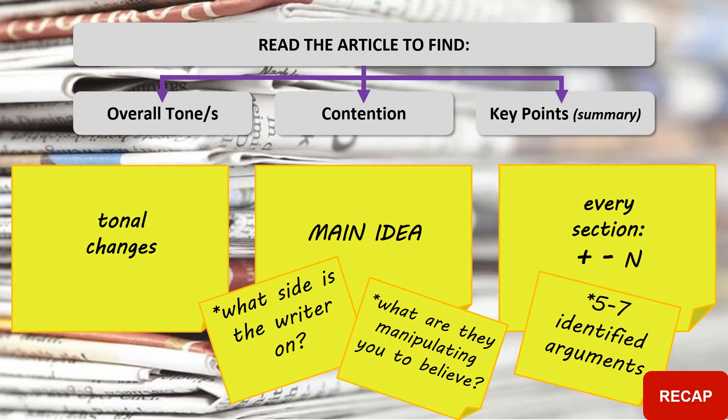Then you read the article all the way through once. If you don't quite understand what the article is about, you read it a couple more times. In this first big reading, what we're looking for are the overall tones that are present and any tonal changes. We also want to discover what the contention of the piece is — that main idea, what side the writer's on and what they're trying to manipulate you to believe.